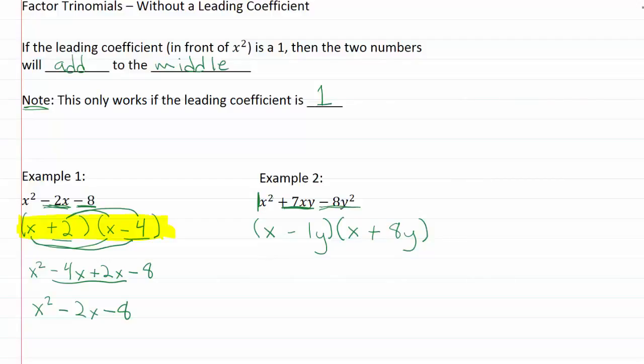First terms together is x squared. Outside terms together is going to give us plus eight x y. Inside terms together is going to give us minus one x y. And the last terms together is going to give us minus eight y squared. Combine our like terms and we get x squared plus seven x y minus eight y squared. And that's exactly the expression that we started with.